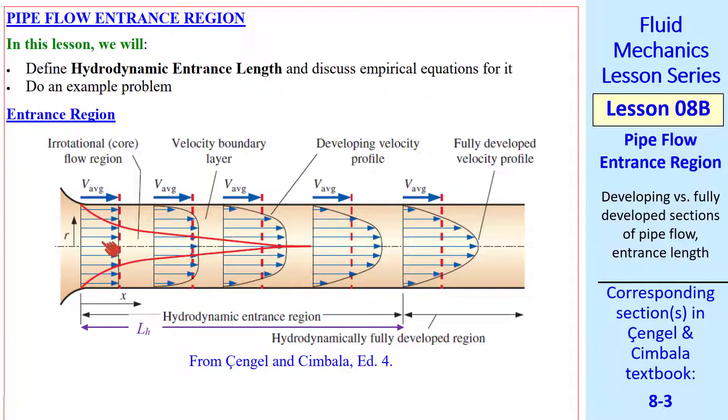Outside of that boundary layer the flow is irrotational. We call this the core region. As we move downstream the profile keeps changing shape and the maximum speed in the middle keeps growing until eventually we get what we call fully developed.